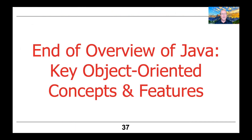This is the end of our very quick overview of key object-oriented concepts and features in Java. I suspect you probably know all of this material already, so I'm not going to belabor it. From here on in, we're going to be delving much more deeply into the more interesting parts of modern Java — the functional programming features and concepts.